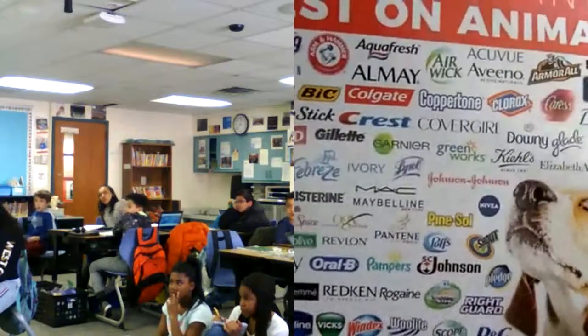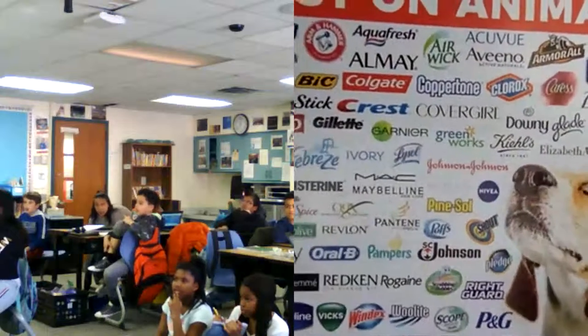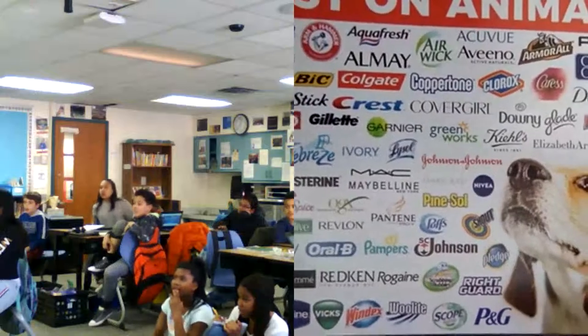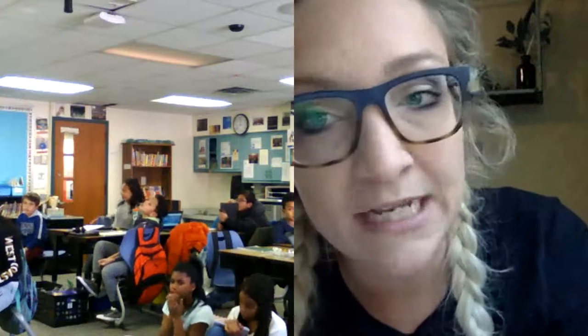Have you guys ever heard of a product being cruelty-free? What cruelty-free means is that product or cosmetic isn't tested on animals. We have a little poster here and it has all these companies that test on animals — Clorox, Oral-B, Revlon, Procter & Gamble, and a lot of stuff you would find in your house: toothpaste, laundry detergent, shampoo, conditioner, hairspray. And cleaning products like Windex — Windex has tested on animals. Even mouthwash — Scope is tested on animals.